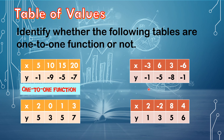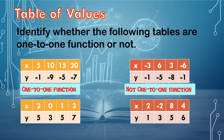For the second table, the x-values are negative 3, positive 6, positive 3, and negative 6 — no repetition of x-values. But in the y-values: negative 1, negative 5, negative 8, and negative 1 — negative 1 is repeated. Therefore, this table is not a one-to-one function.